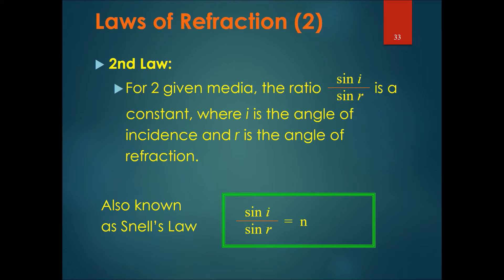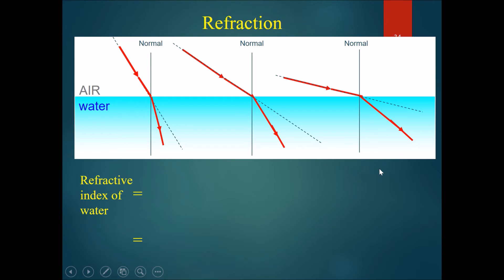The second law of refraction is the interesting one. For two given media, the ratio of sine i over sine r is a constant, where i is the angle of incidence and r is the angle of refraction. This is also known as Snell's law: sine i divided by sine r equals n, where n is the refractive index.